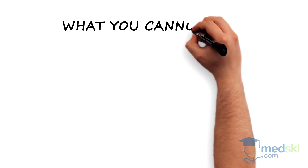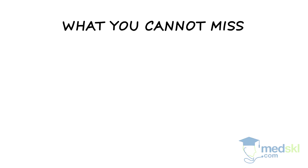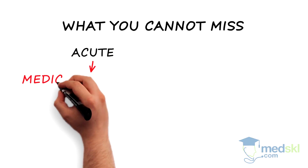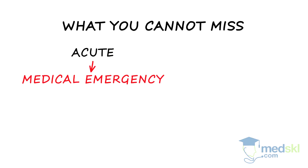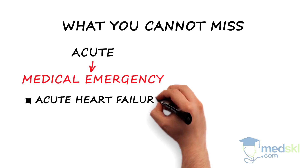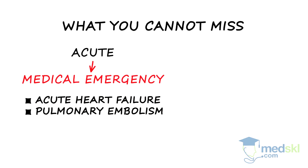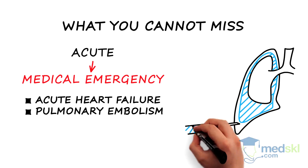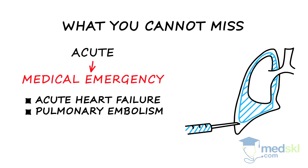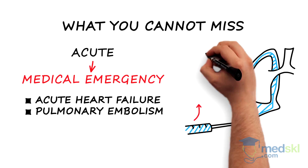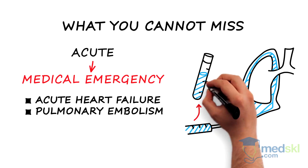What you cannot miss: Ask about the temporal evolution. If the onset is acute, this is a medical emergency — for example, acute heart failure or pulmonary embolism. If the patient is in distress, a thoracentesis should be performed promptly for alleviating the symptoms, but don't forget to send it for analysis.